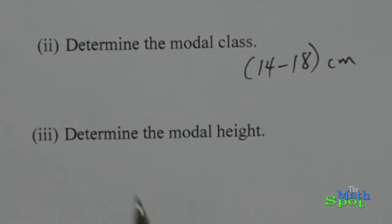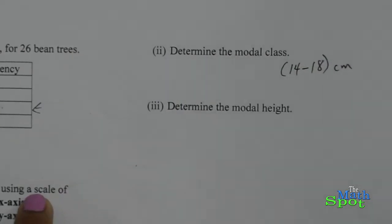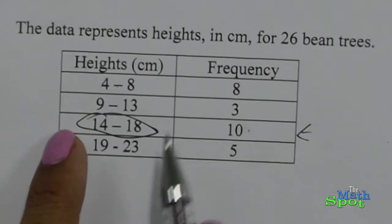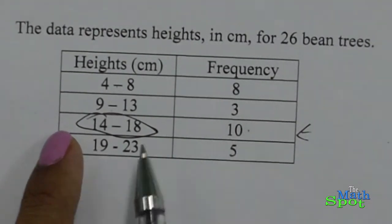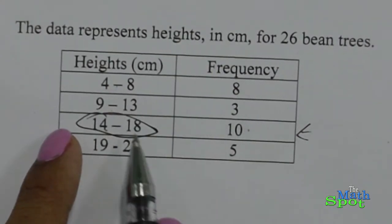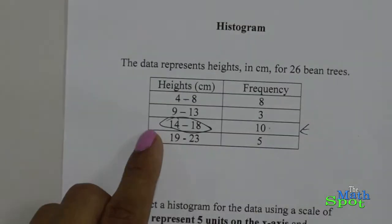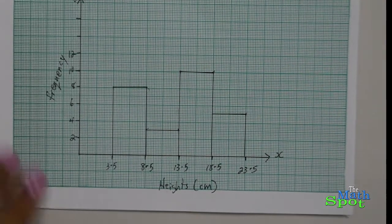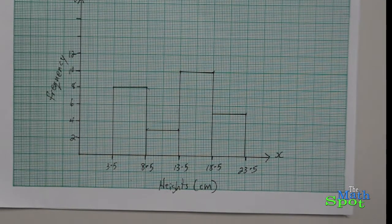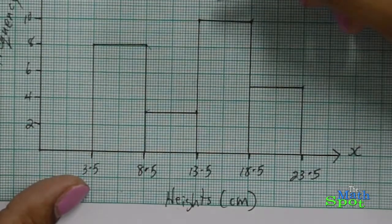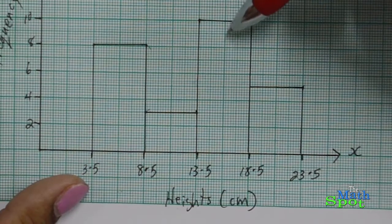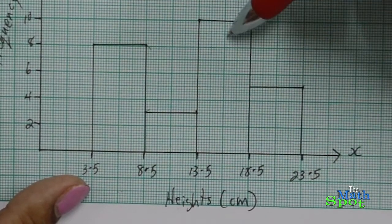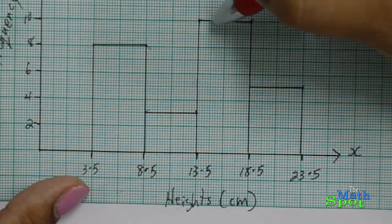Let's now answer the third question: determine the modal height. To get the modal height, that cannot be read from your table of values because the interval represents a range — we don't know from those 10 values whether they are 14 cm, 15 cm, or 16 cm. So to be very sure, we need our histogram. Make sure you have your rulers and pencils handy. To get the modal height, look for the highest bar — for us, that is the third bar, which is also the modal class's bar. We're going to be creating an X.